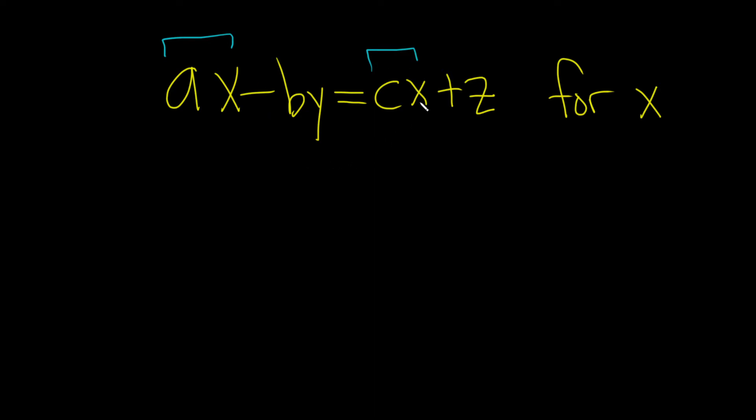Let's do it in steps. Let's start by getting rid of the cx. So minus cx minus cx to get it all together on the left-hand side. We have ax minus cx, then we still have this minus by, and that's equal to z.